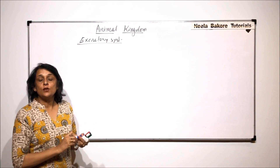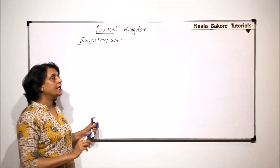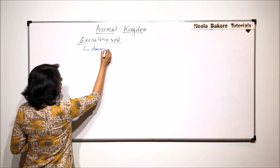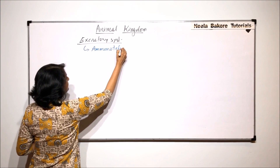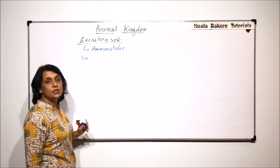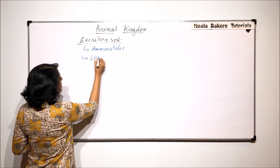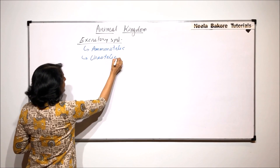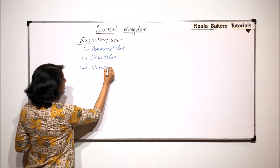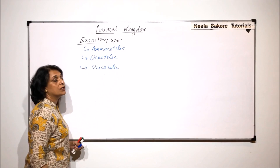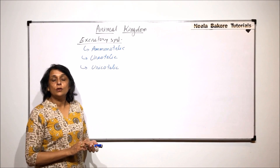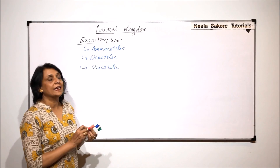On the basis of the nitrogenous waste which they eliminate, animals can be classified as ammonotelic, where ammonia is the chief nitrogenous waste; ureotelic, where they eliminate urea; and uricotelic, where animals excrete uric acid. We also know the examples which can be placed in each category.